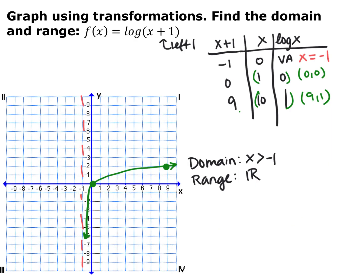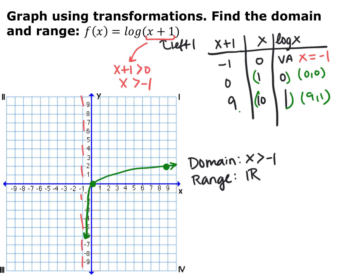If we look at f of x equals log of x plus 1 and want to graph it using transformations, this function has been shifted to the left one. I set up my parent table with base 10 since no base is written, using the key points. I shifted all points to the left one by subtracting 1 from all x-coordinates. My vertical asymptote now becomes x equals negative 1. The point originally at (1, 0) is now at (0, 0), and the point originally at (10, 1) is now at (9, 1). The domain, since my vertical asymptote shifted left one, is x greater than negative 1. The inside of the logarithm, x plus 1, must be greater than 0, confirming x is greater than negative 1.